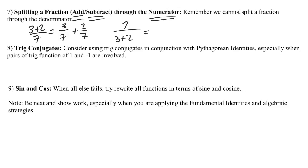Remember that we cannot split a fraction through the denominator. So if I had seven divided by three plus two, I could not write this as seven thirds divided by seven halves. Those two things are not equal. But it can be done as long as you're splitting through the numerator. Sometimes that's going to lead to really fast solutions to the proof, as we're going to see in the last example of these notes.